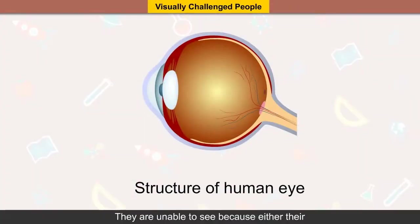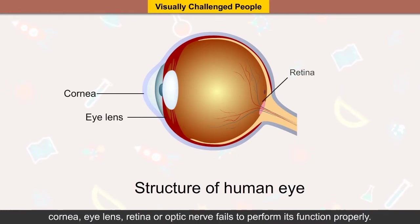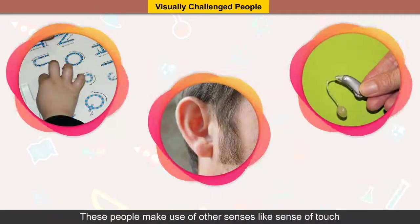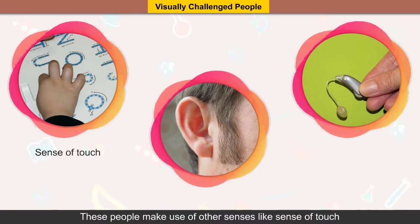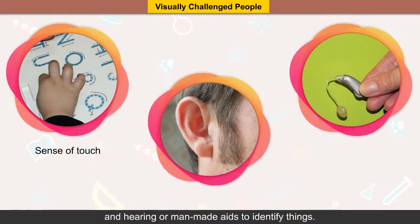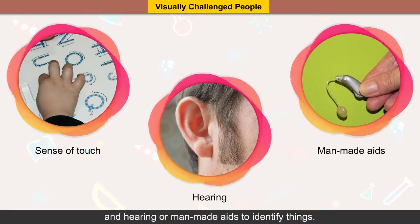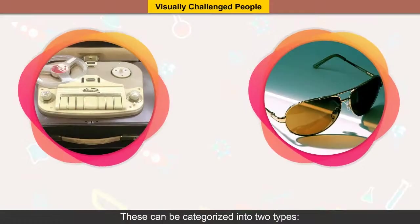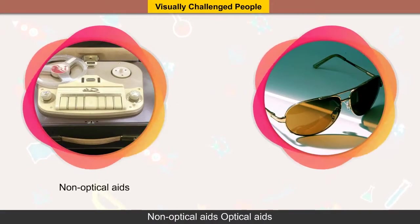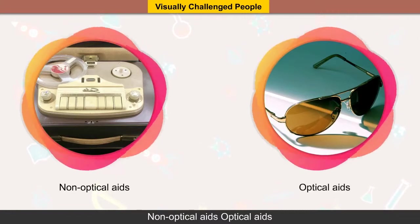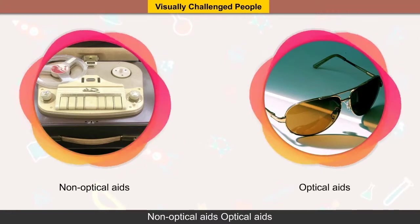Visually challenged people are unable to see because either their cornea, eye lens, retina, or optic nerve fails to perform its function properly. These people make use of other senses like touch and hearing, or man-made aids, to identify things. These aids can be categorized into two types: non-optical aids and optical aids.